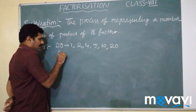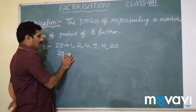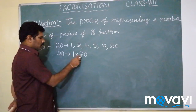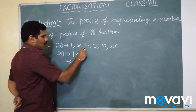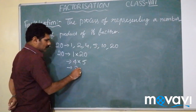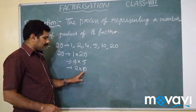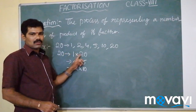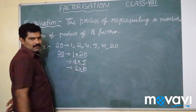Now, what do you mean by factorization? Representing this number in terms of the product of its factors. So I can write 20 as 1 × 20, or as 4 × 5 — since 4 and 5 are 20 — or as 2 × 10. Note that 5 × 4 and 4 × 5 are the same, 10 × 2 and 2 × 10 are the same, and 1 × 20 and 20 × 1 are the same. This procedure of representing a number in terms of the product of its factors is called factorization.